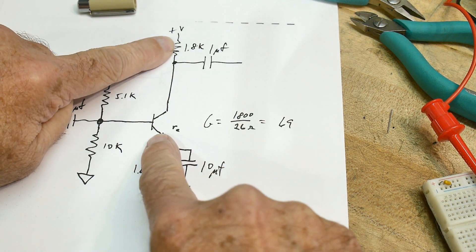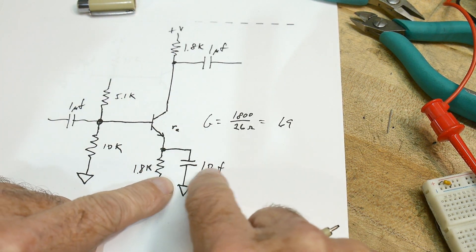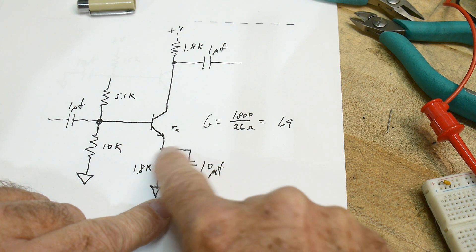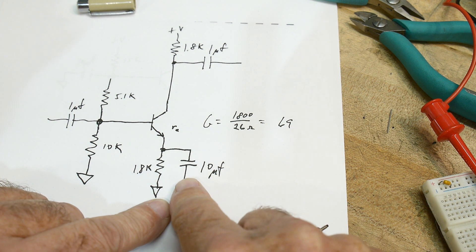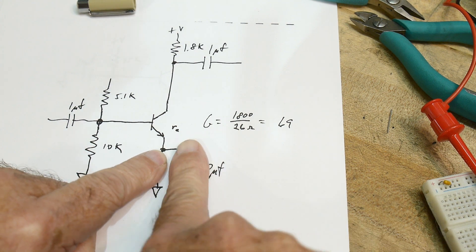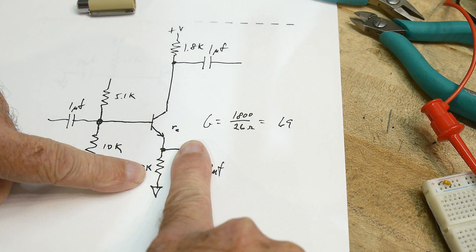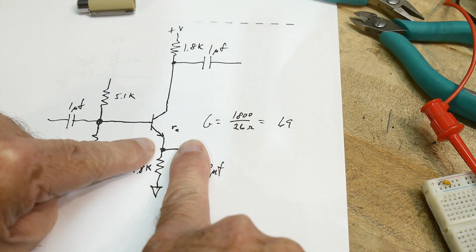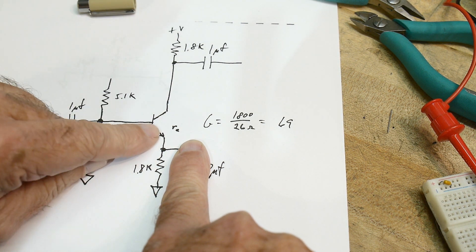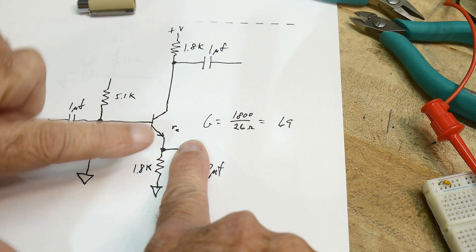It's this resistor divided by this resistor. If it was a DC system and you didn't have this capacitor, then it would be this resistor divided by this resistor plus that resistor actually. But since it's so small, it's normally just that divided by that.